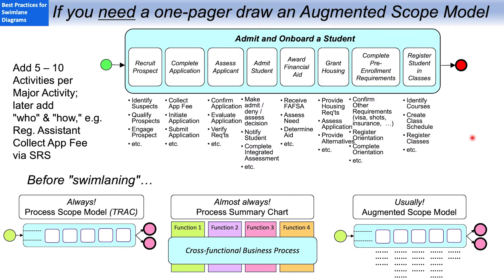And I usually do the augmented scope model as well. And what we're seeing is if we do that, we often do not need an as-is swim lane diagram. The augmented scope model is enough. So that saves us time and energy for the to-be phase.